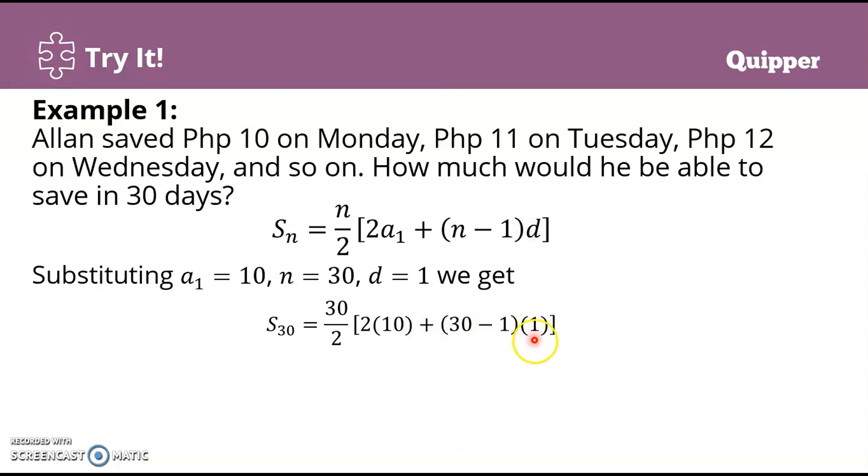Of course the common difference is 1. Solving that: 30 minus 1 is 29, times 1, so that's 29. 2 times 10 is 20. 30 over 2 is 15 times 49, so that gives you 735. Therefore, Allan will be able to save 735 pesos in 30 days.